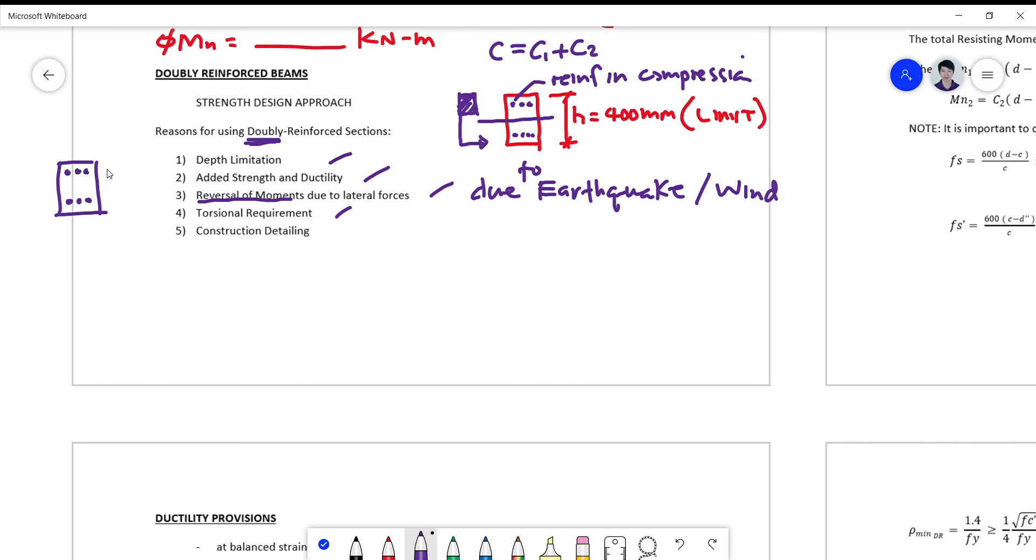equal number of reinforcement both on the top and at the bottom, then just having a single reinforced section. Another thing is on the construction detailing. So if you have here a double reinforced beam, it's much more practical and easy to detail your stirrup,